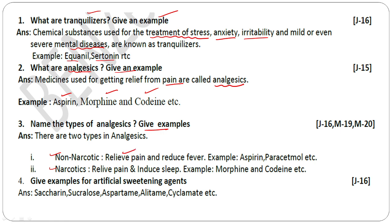Analgesics are classified as narcotic and non-narcotic. Non-narcotic analgesics relieve and reduce pain but do not induce sleep. Examples of non-narcotic analgesics are aspirin and paracetamol. Narcotic analgesics induce sleep; examples are morphine and codeine, which are therapeutic drugs but can be misused.